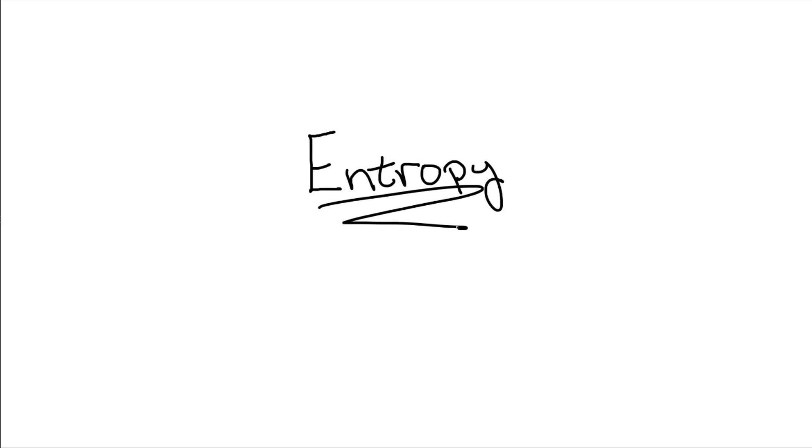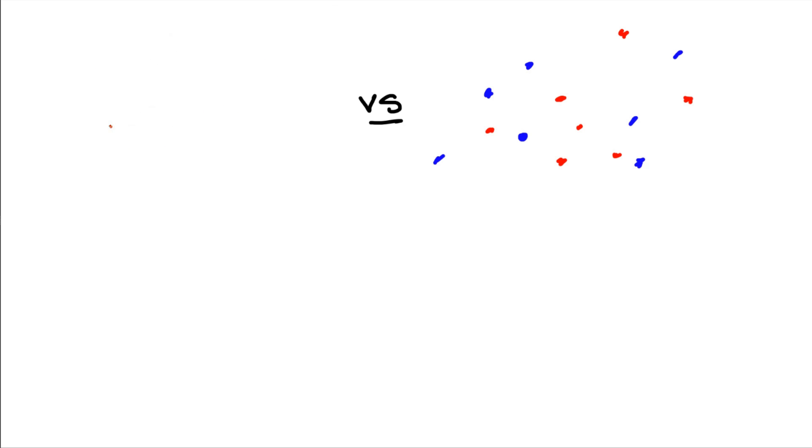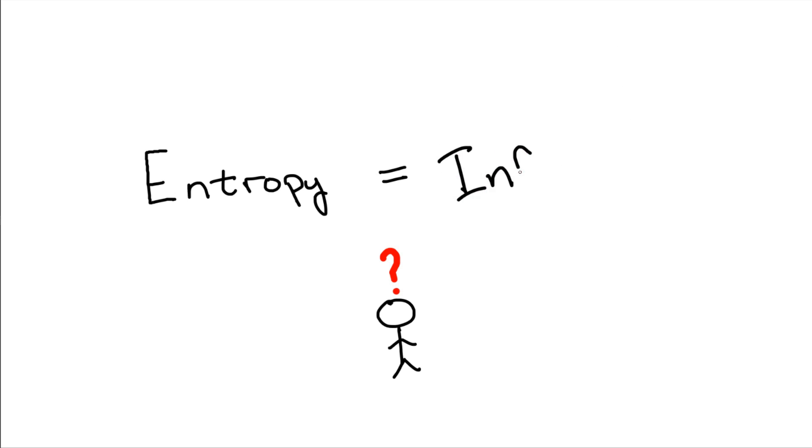To me, the idea of entropy always seemed like a very nebulous and non-intuitive concept. It was originally explained to me as a measure of how disordered or mixed up a system is, but that was never particularly satisfying since disorder seemed like a very subjective thing. This bothered me for quite some time until I learned to think about entropy in a different way, as a measure of information, not disorder.